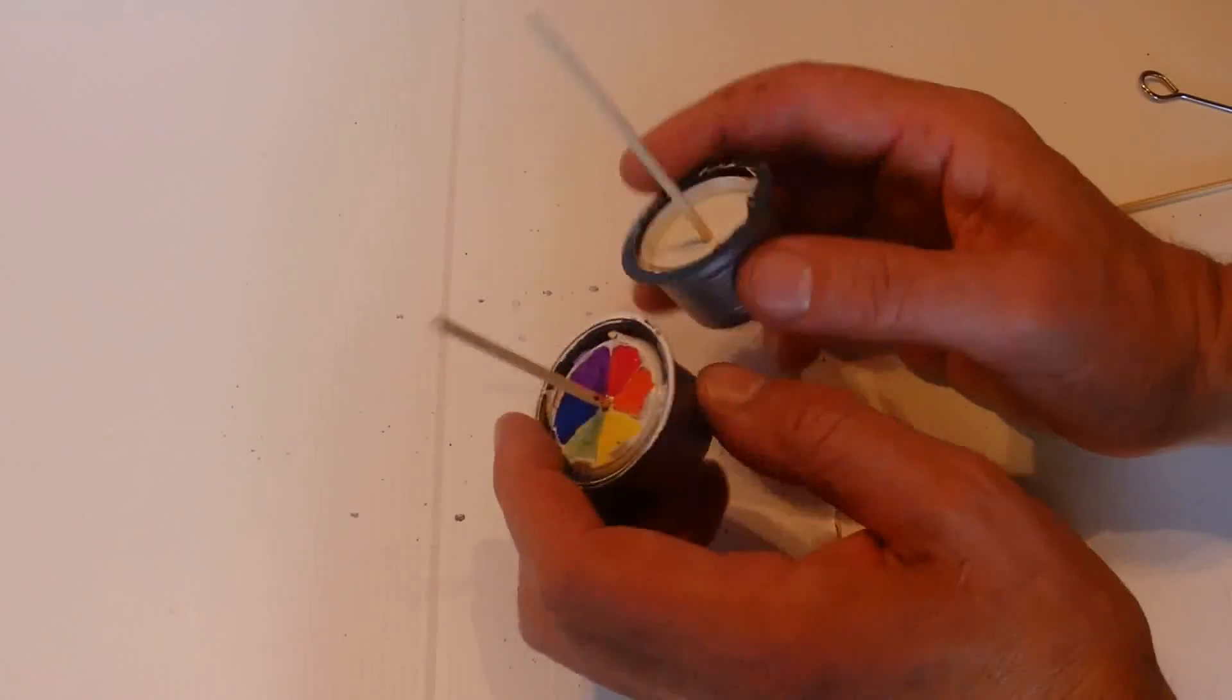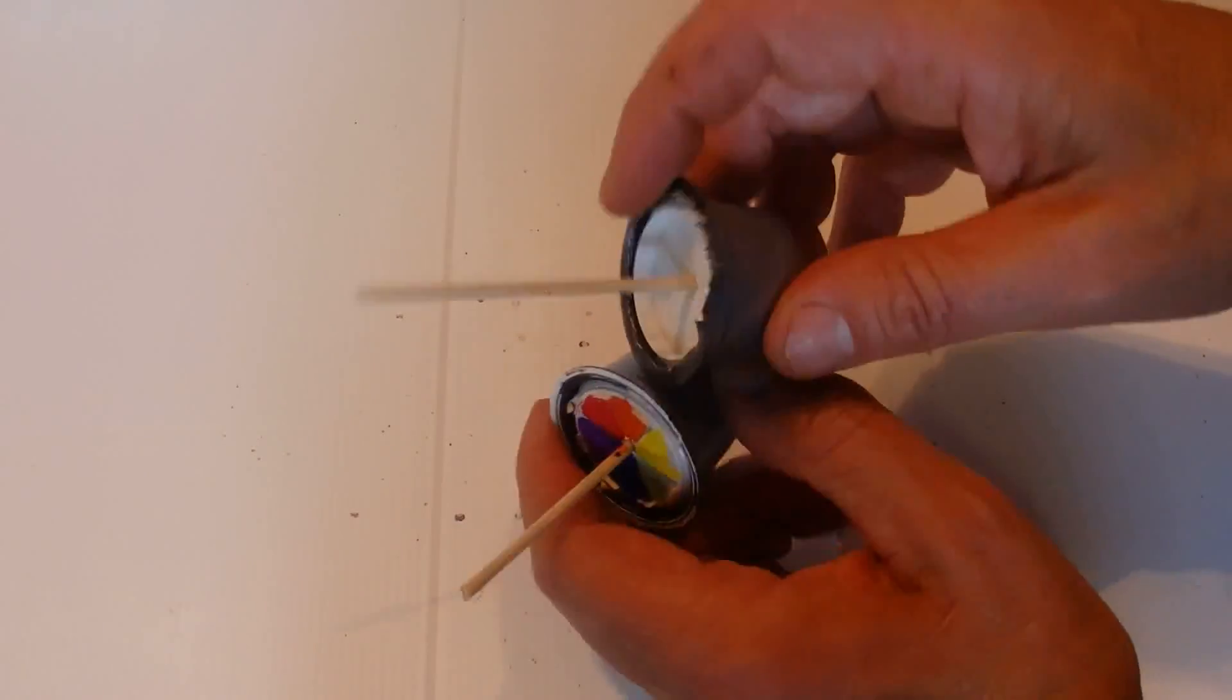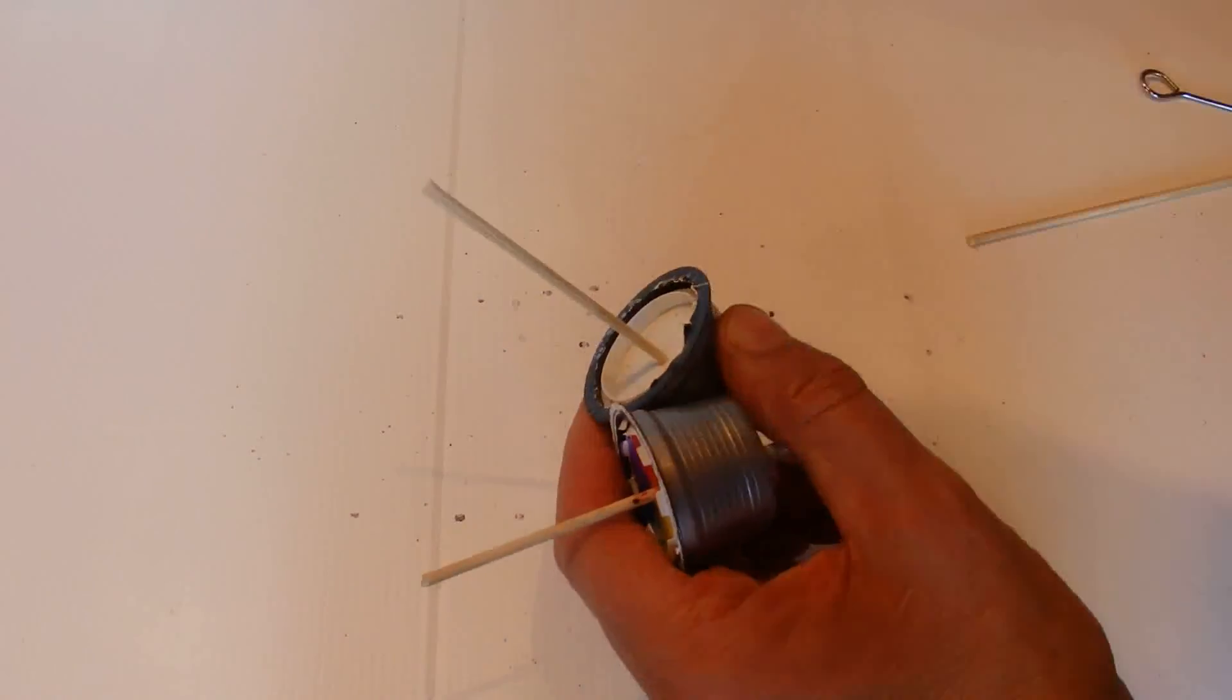So there we go, there's a simple way to make a spinning top from an old coffee pod and one of those wooden skewers. Okay, thanks.